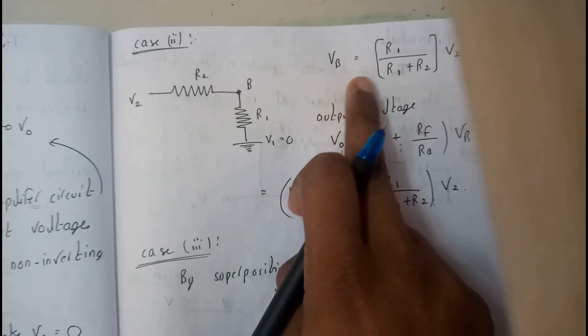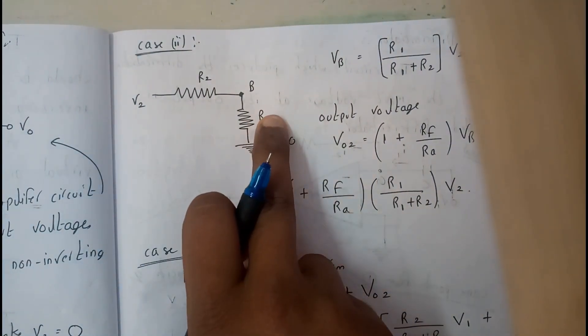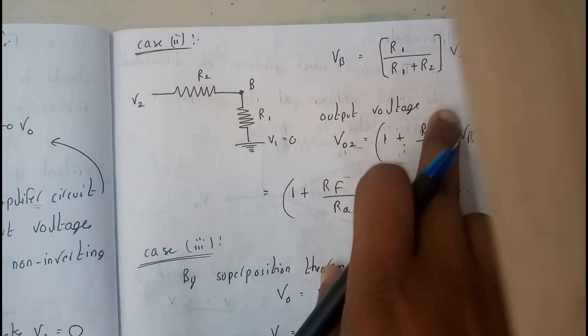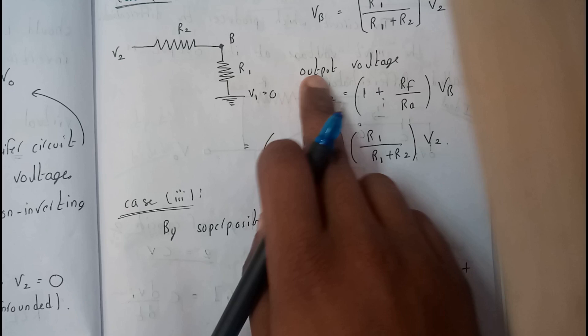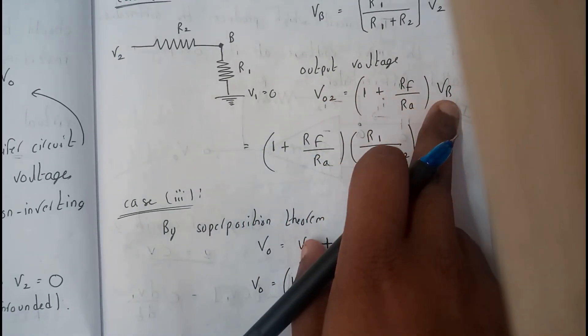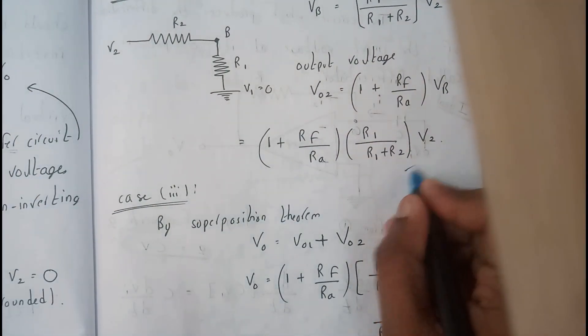Similarly you gonna get VB that is nothing but V2. VB is equals to R1 into V2 by R1 plus R2. This is how we got the next equation. The output voltage is nothing but V02 is equals to 1 plus Rf by Ra into VB. We will be substituting the VB value so we got this.